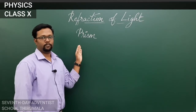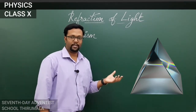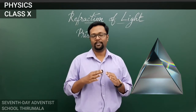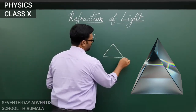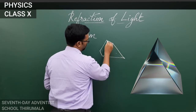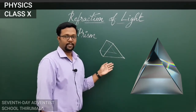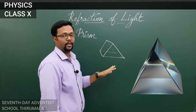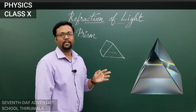So we should know what is a prism. A prism is a homogeneous transparent refracting medium which is bounded by at least two non-parallel plane surfaces inclined at some angle. So the basic structure of a prism is somewhat like a triangle.